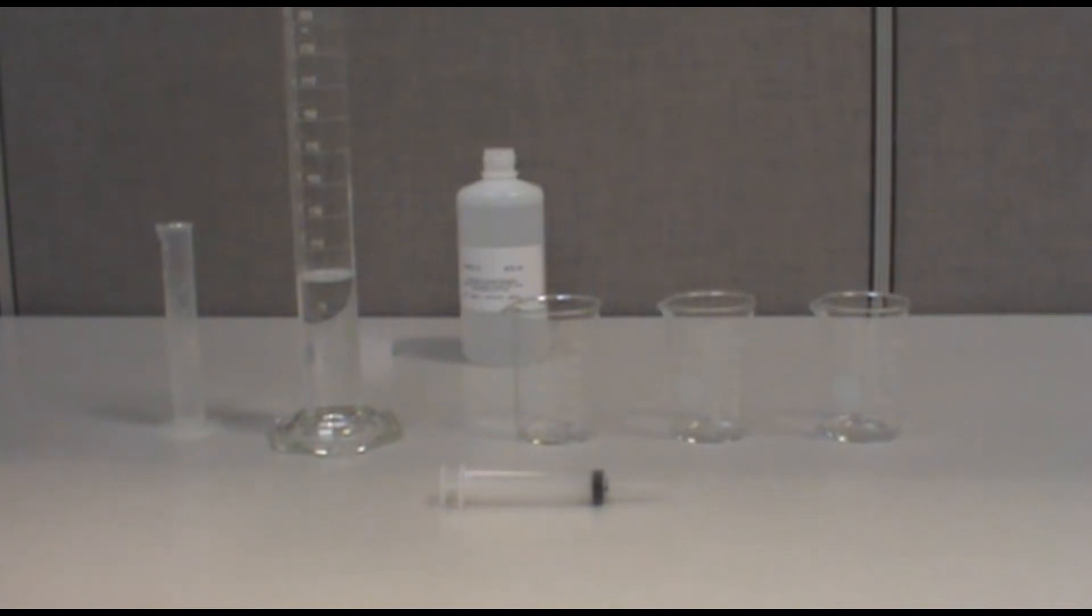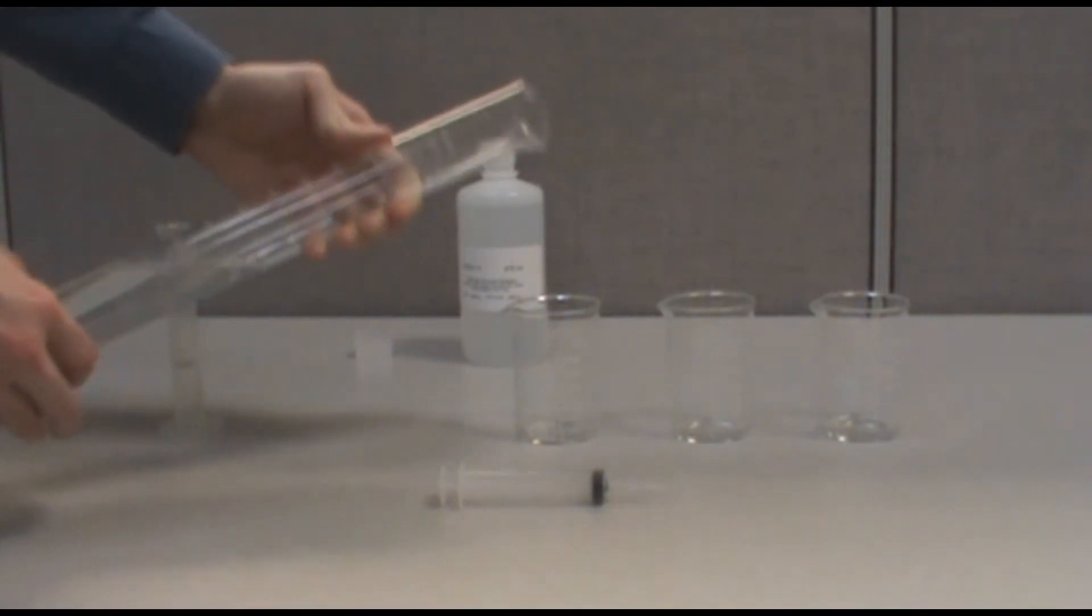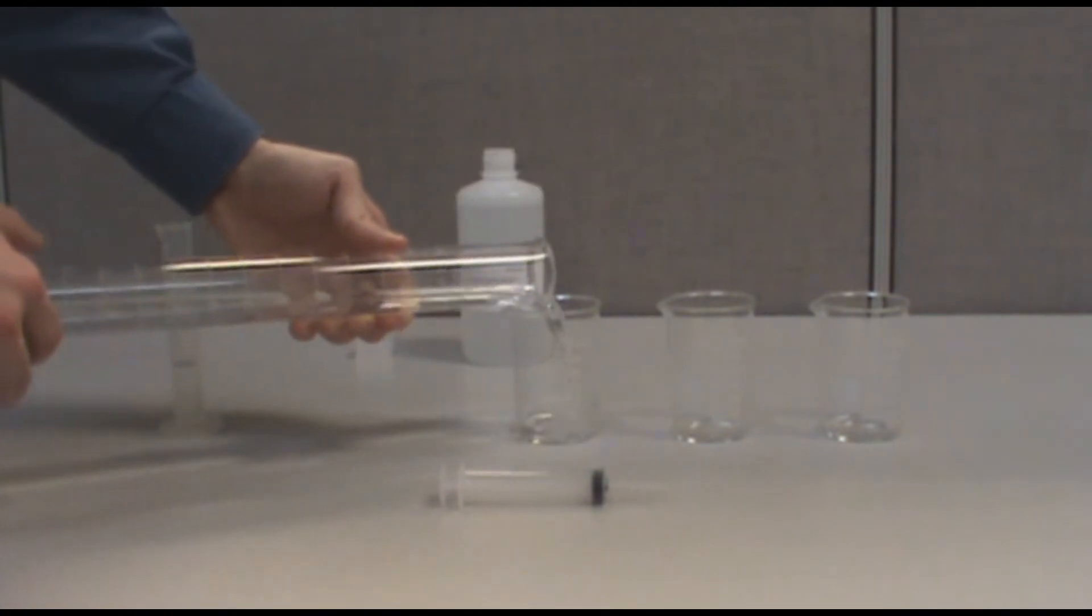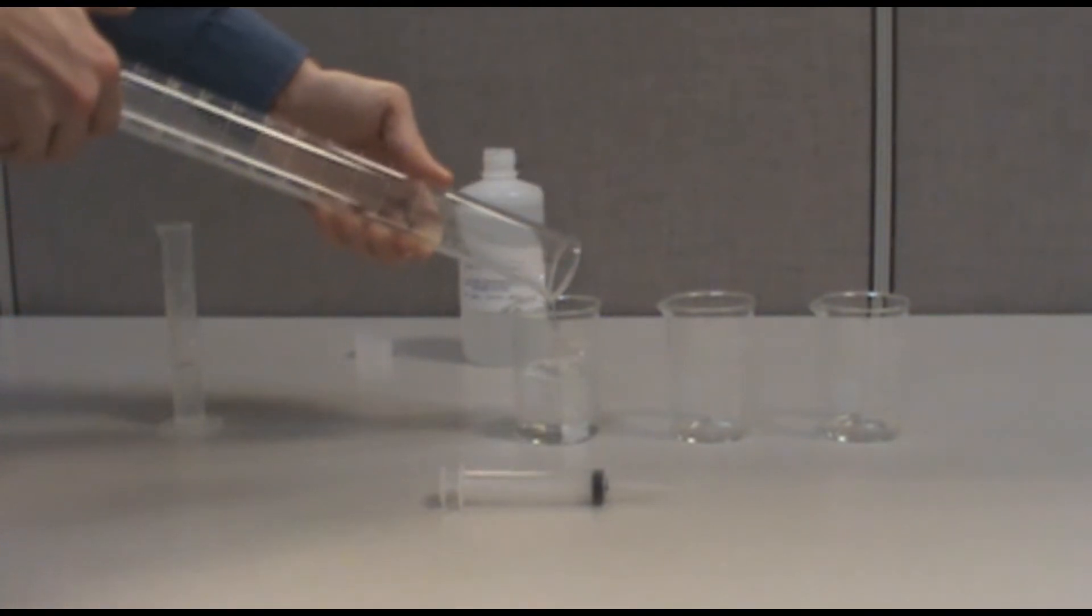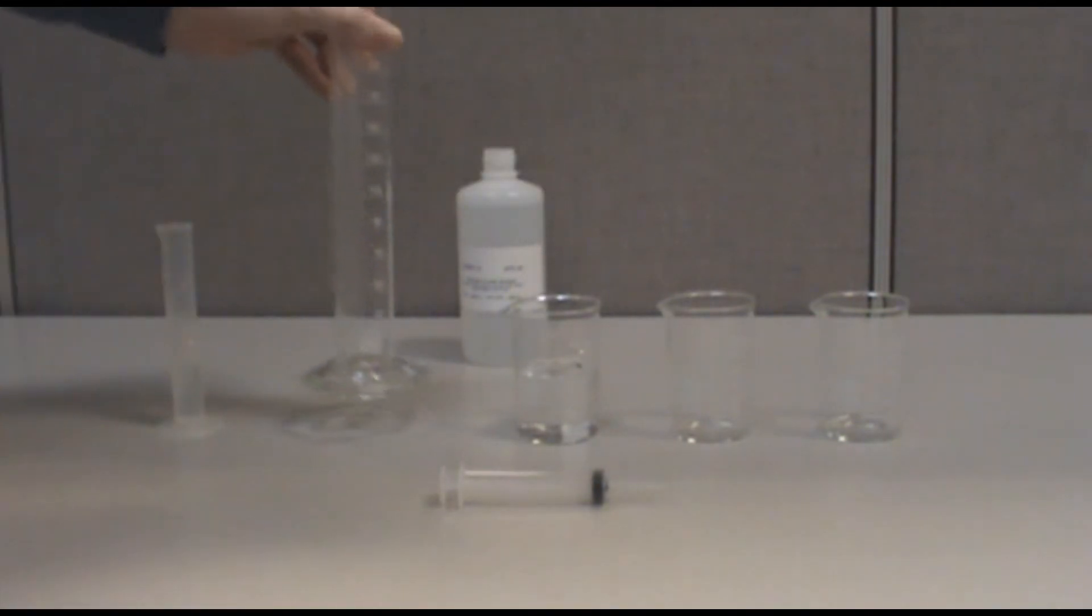To begin, measure 90 milliliters of DI water and 10 milliliters of 1,000 parts per million standard using your graduated cylinders. Pour both solutions into your first beaker and stir them together to create a homogeneous mixture.